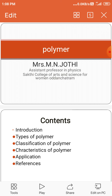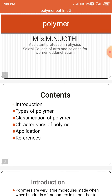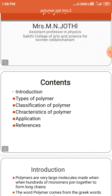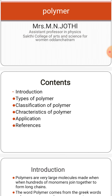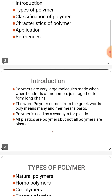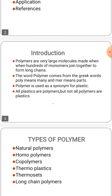Examples: Nylon, Polythene, Polyester, Teflon, Epoxy, and natural polymers are Silk, DNA, Wool, Cellulose, and Proteins, etc. Today we have discussed about introduction of polymer, types of polymer, classification of polymer, characteristics of polymer, and applications of polymers.